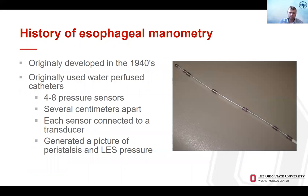Manometry was originally developed in the 1940s. Originally, these used water-perfused catheters with four to eight pressure sensors spaced several centimeters apart, which could generate a picture of pressures generated in the esophagus and how these propagated over time along the length of the esophagus and the lower esophageal sphincter.